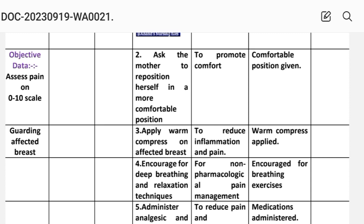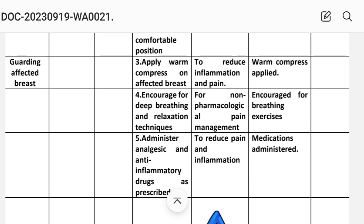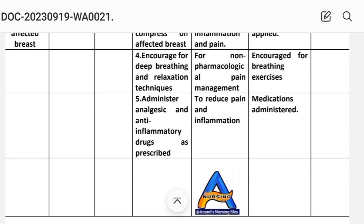Implementation: comfortable position given. Third: apply warm compress on affected breast; this is planned to reduce inflammation and pain. Implementation: warm compress applied. Fourth: encourage deep breathing and relaxation techniques; rationale is for non-pharmacological pain management. Implementation: encourage breathing exercises. Fifth: administer analgesics and anti-inflammatory drugs as prescribed — to reduce pain and inflammation. Implementation: medication administered.